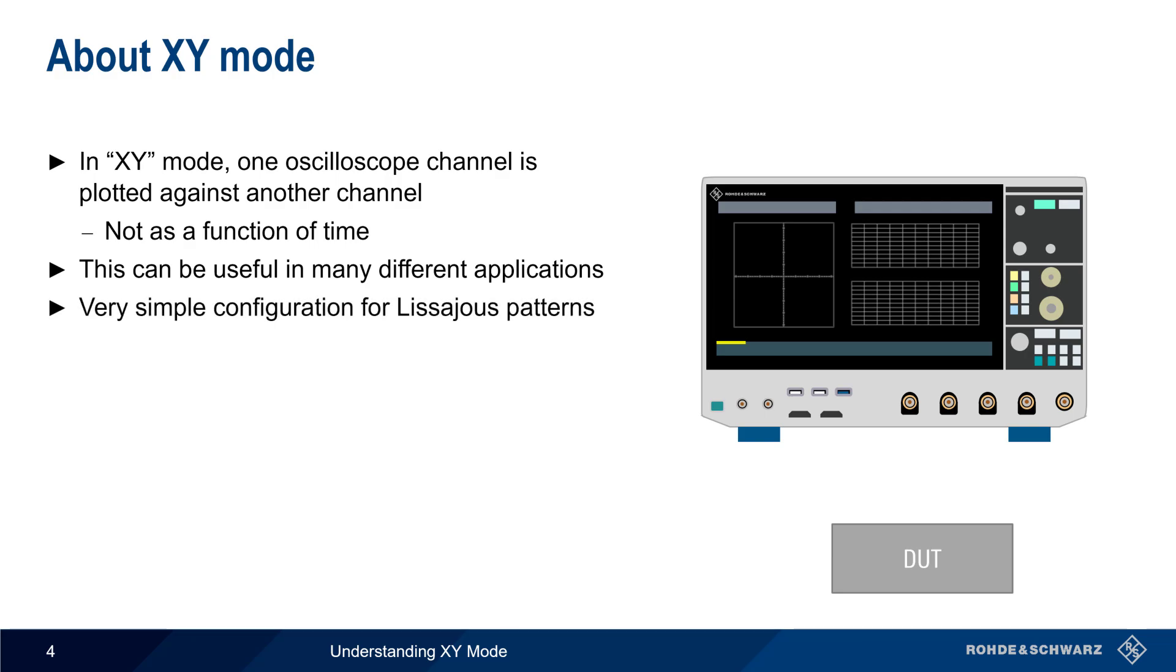Creating Lissajous patterns on an oscilloscope is very easy. The X signal is connected to one channel, the Y signal is connected to another channel, and XY mode is started. Note that many modern digital oscilloscopes are capable of displaying the individual X and Y signals together with the Lissajous pattern.